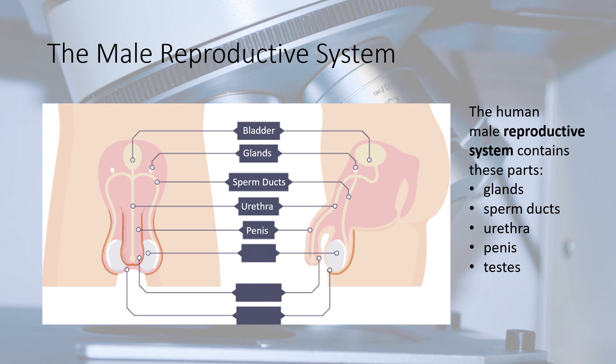The penis has two functions: firstly, to pass urine out of the man's body; and secondly, to pass semen out of the man's body. The urethra is the tube inside the penis that can carry either urine or semen. A ring of muscle makes sure that there is no chance of urine and semen getting mixed up.